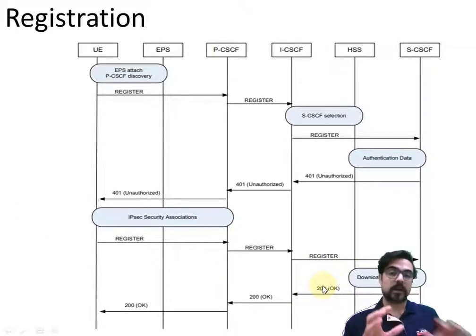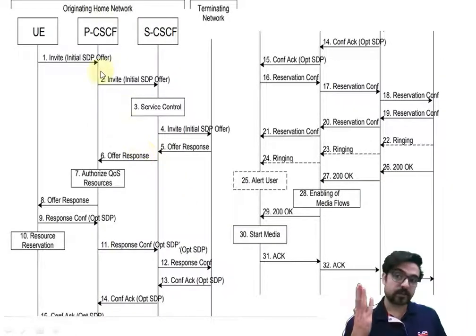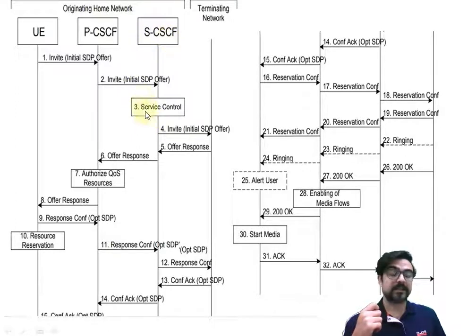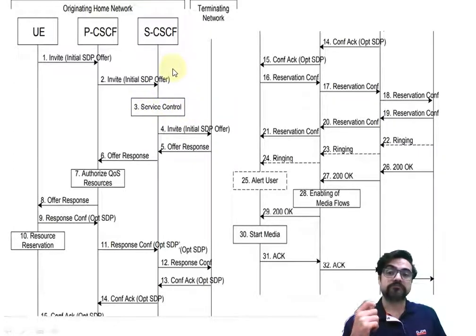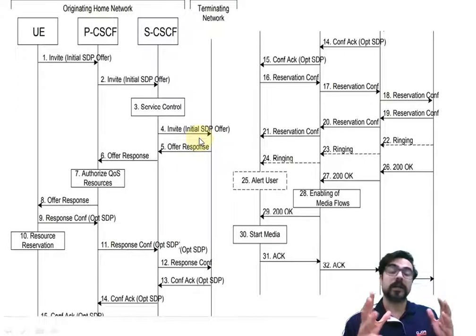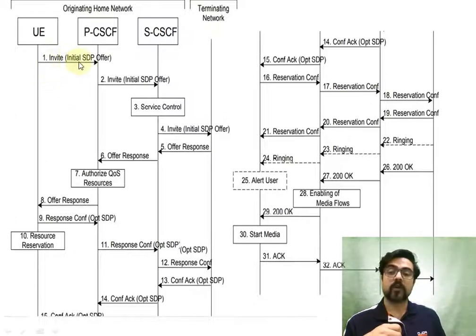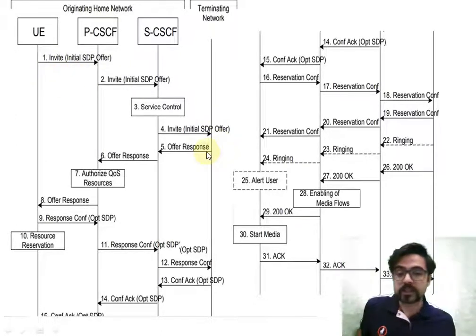After the second register, we get a 200 OK — meaning we are registered. After registration, the call setup begins with an Invite containing SDP. The Invite goes towards SCSCF, which performs service control, looks at the services, and sends the request to the network. There are acknowledged request-response exchanges throughout this process.